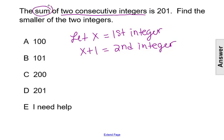Now, knowing that there is a sum, if we add those two integers up, we'll have a sum of 201. So we can set up the equation of x plus x plus 1 equals 201.